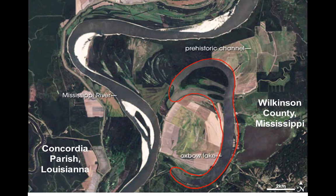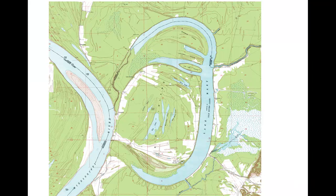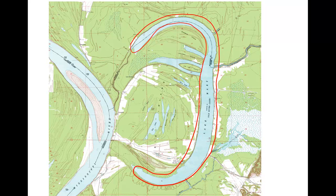What happened here is the river channel once followed a path something like this. Eroding on the outside of the bends meant that these meanders were moving towards each other over time. Eventually they eroded into each other. When that happened, the river abandoned that meander loop and took a shorter, straighter path. The abandoned portion of the meander loop remains as an oxbow lake. This is a topographic map showing the same area in the previous aerial photo — here is the oxbow lake, an abandoned meander loop formed when adjacent meanders eroded into each other.